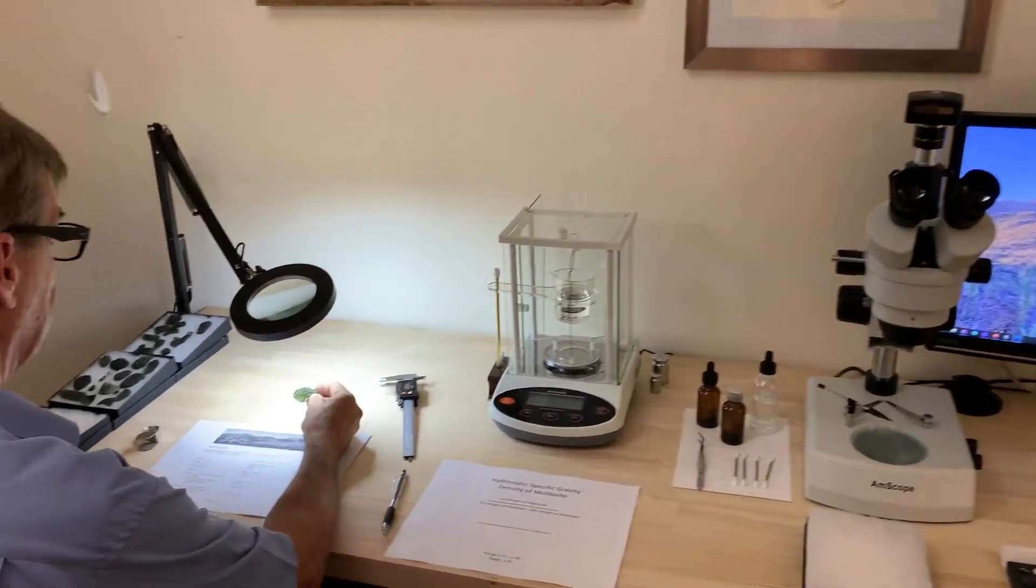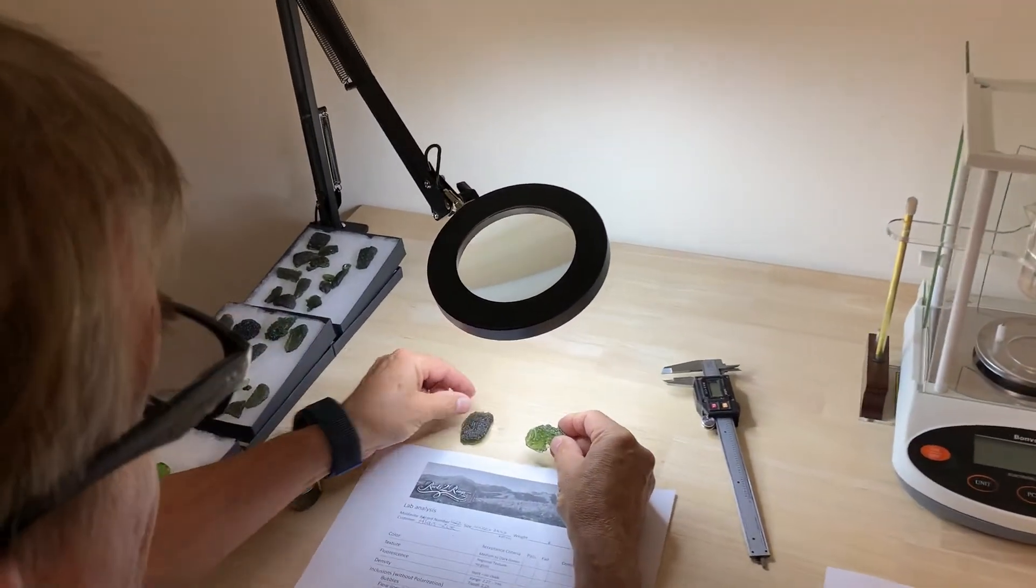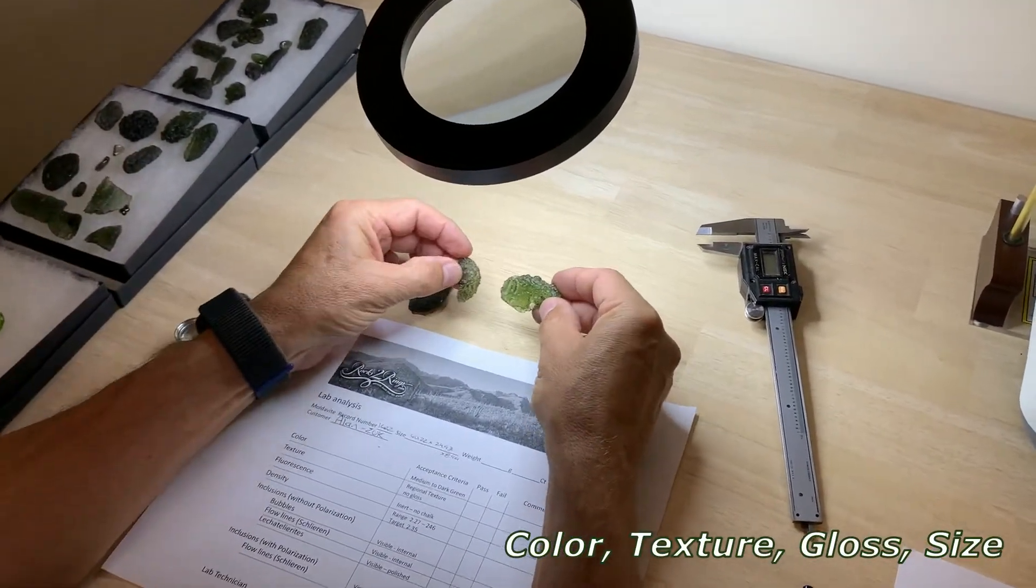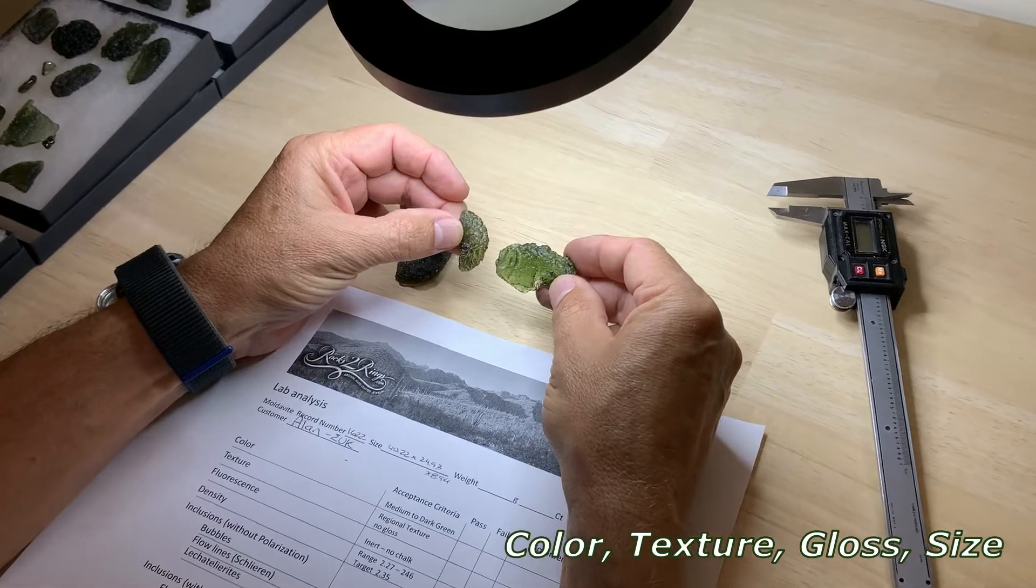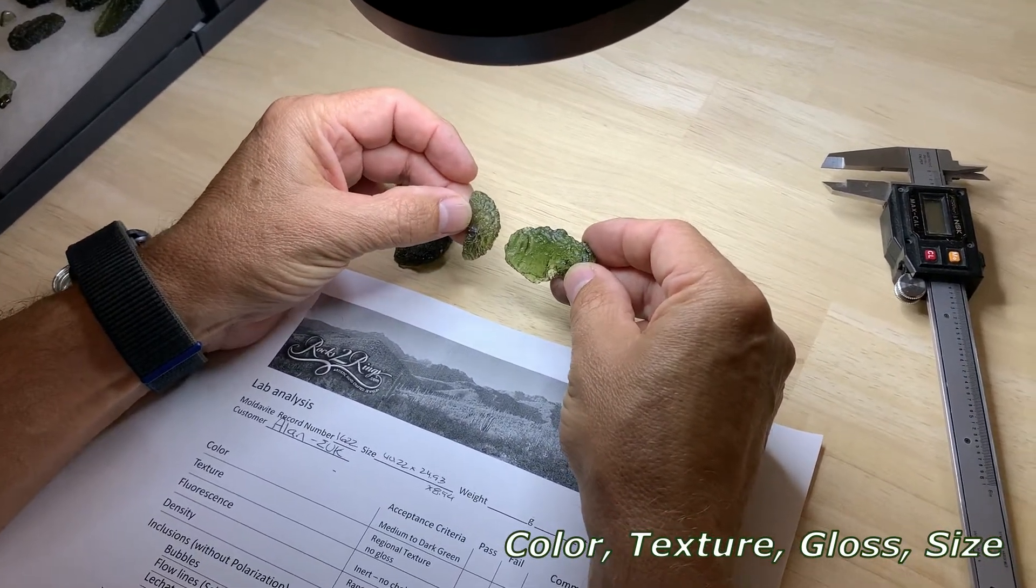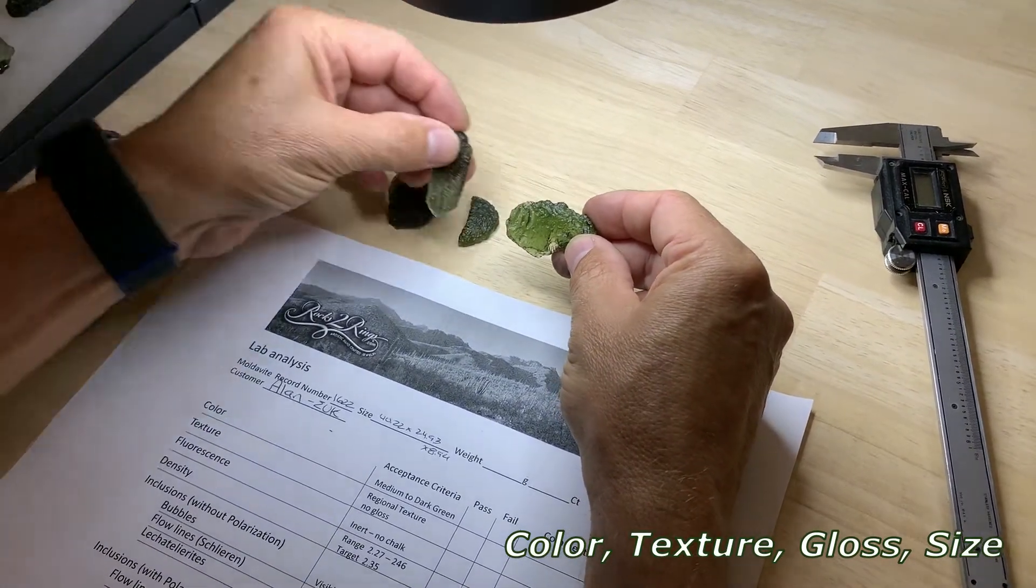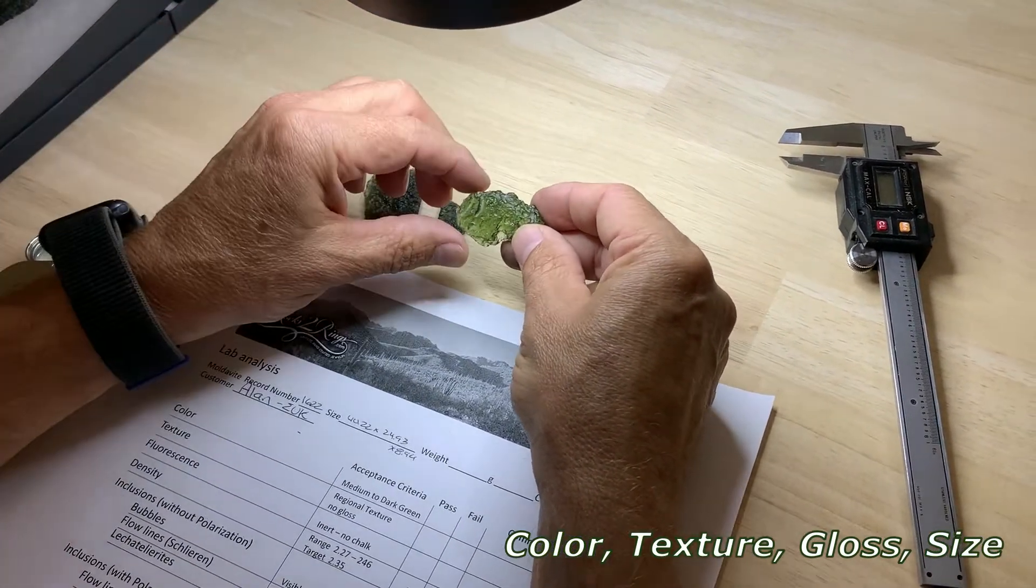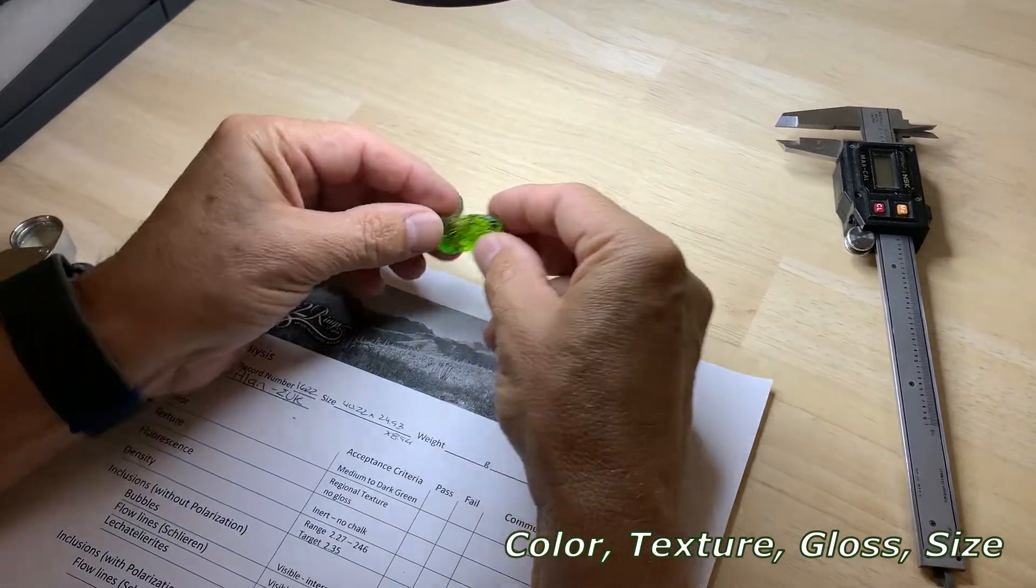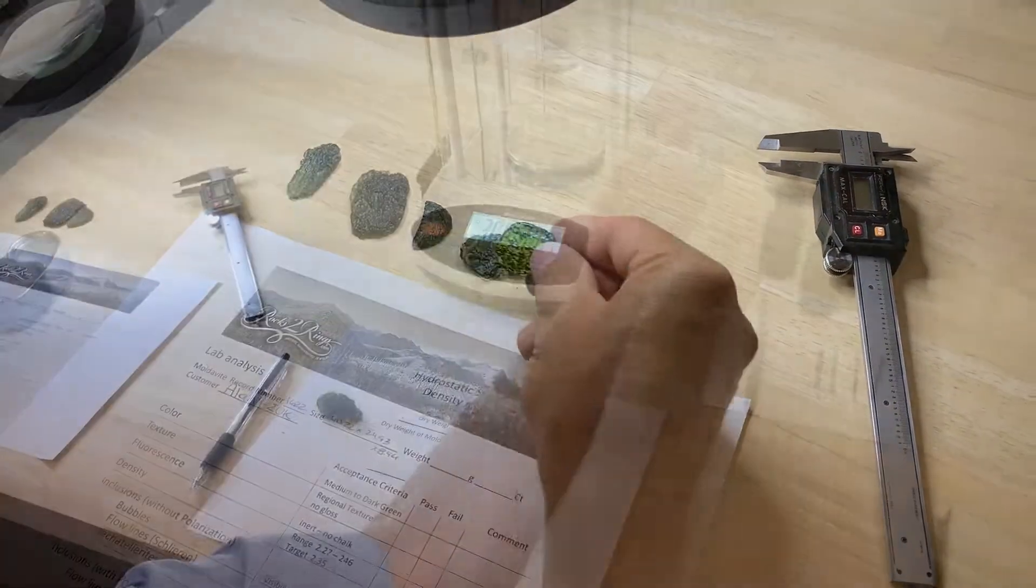The first thing we do is look at shape and texture. I take a couple of pieces from a similar mine and do a comparison. This is southern Bohemia Czech Republic texture from that field. I look at a bunch of different textures, so the texture's right, color's right. I also look at the glossiness. You can see this is a fake piece of moldavite, and this is a real one.